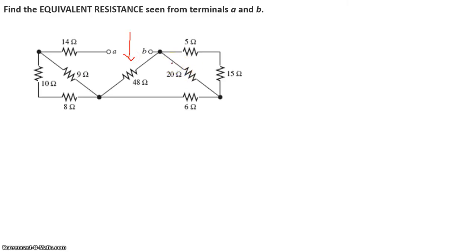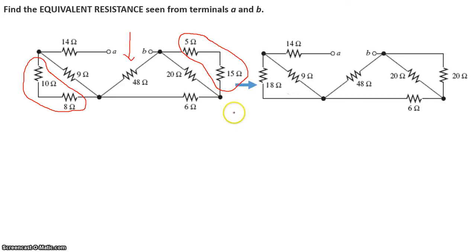So for this particular circuit, let's take a look. We see that 10 ohm and 8 ohm are in series. We also see that 5 ohm and 15 ohm are in series. So let's combine them. So we get 10 and 8 combined together, give me 18 ohms. 5 and 15 ohm combined together gives me 20 ohms. So we have 18 ohms and 20 ohms.